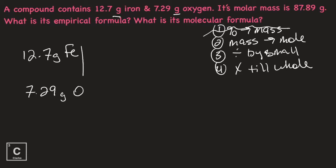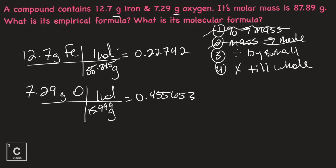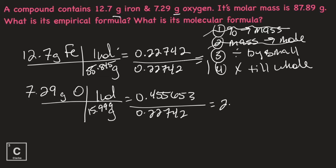We need to do mass to mole, so I'm going to set my problems up to do my mole conversion. Bring my unit down, put a mole on top — because my unit is grams, and grams is molar mass, the mass of one mole. We need to look at our periodic table to get our molar mass of iron: 55.845. And then oxygen: 15.999. When we do this conversion, we need as many decimals as possible — at least four or five. Now we need to divide by small. Point two is going to be smaller than point four, so we divide both answers by the small. We're creating a one because we need a ratio. I'm getting 2.0. One and two are both whole numbers, so we don't need the fourth step.